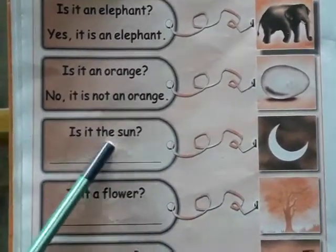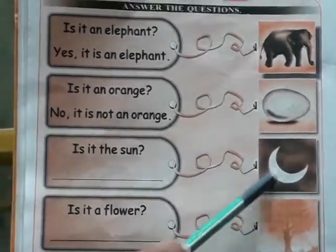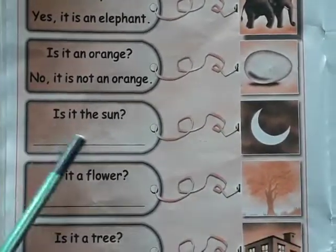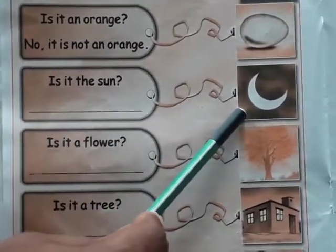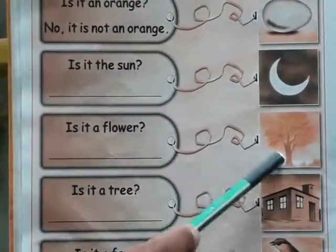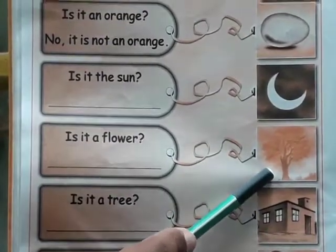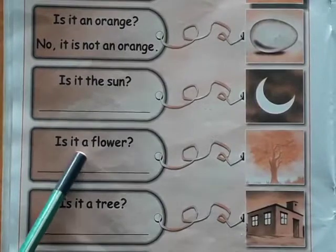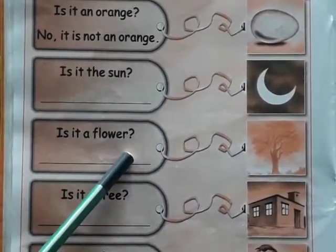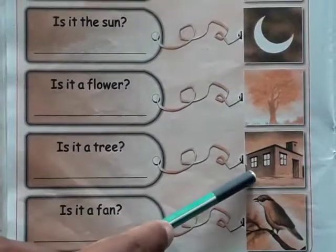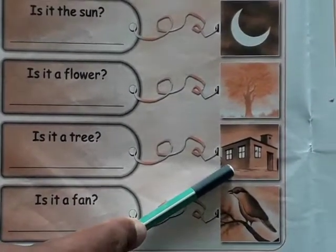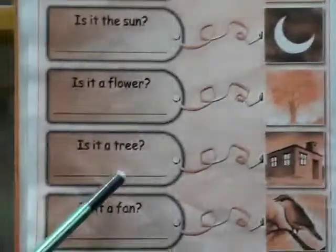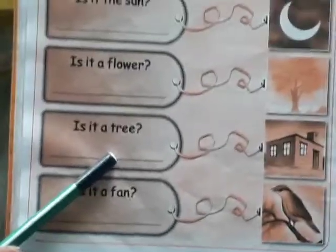Next: Is it the sun? No, it is the moon. Write: 'No, it is not the sun.' Right answer: 'It is the moon.' Next: Is it a flower? No, it is a tree. Write: 'No, it is not a flower.' Right answer: 'It is a tree.' Next: Is it a tree? No, it is a house. Write: 'No, it is not a tree.' Right answer: 'It is a house.'